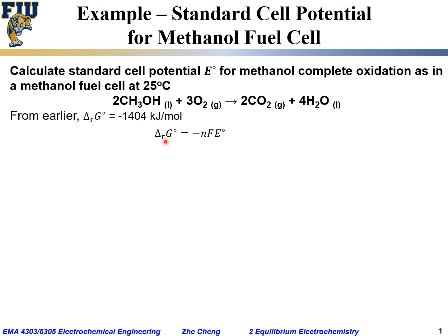Recall the relationship between ΔrG°, the standard reaction Gibbs free energy change, and E°, the standard electrode potential. The relationship involves minus n times F, linking the electrical work done to the external surroundings and the change in the system.